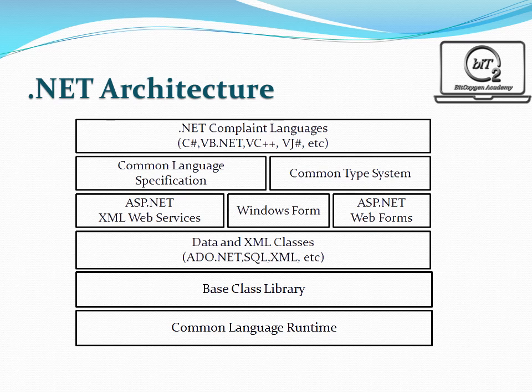In the architecture, the components of .NET are: Common Language Runtime, Microsoft .NET Framework Base Class Library, Data and XML Classes, ASP.NET Windows Forms, ASP.NET Web Forms, Common Language Specification, Common Type System, and .NET Languages.